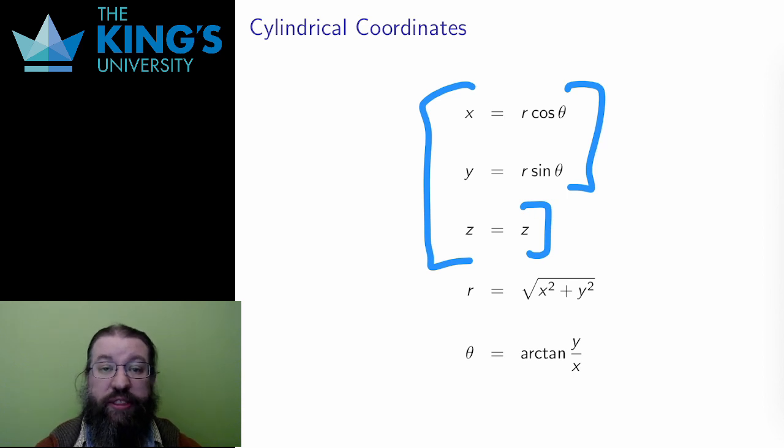The inverse transformation is the same as well, with r the square root of x squared plus y squared, and the angle, the arctangent of y over x.